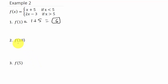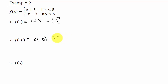Now what about f of 10? Well, 10 is greater than 5, so we plug it into the second part of the function, 2x minus 3. That's 2 times 10 minus 3, which is 20 minus 3, which equals 17.